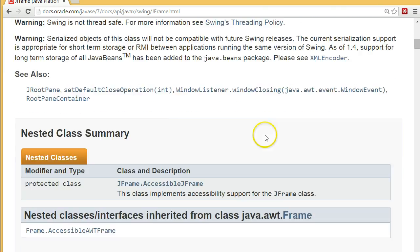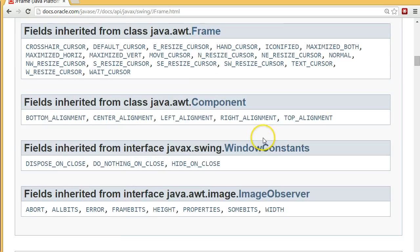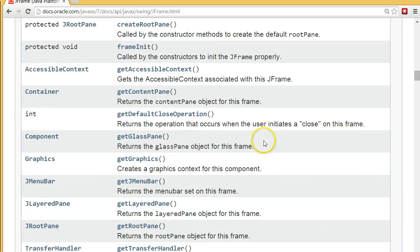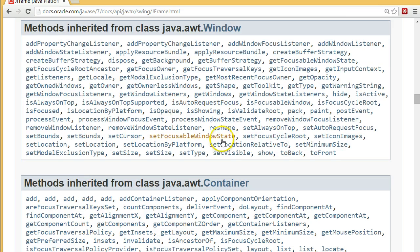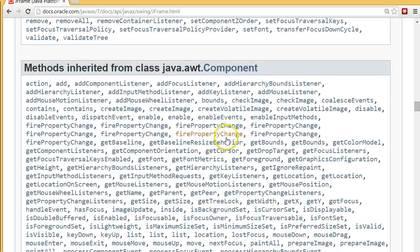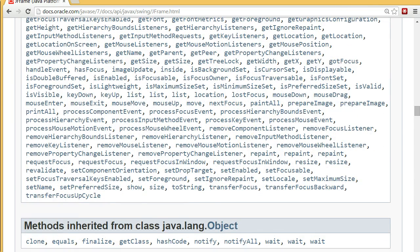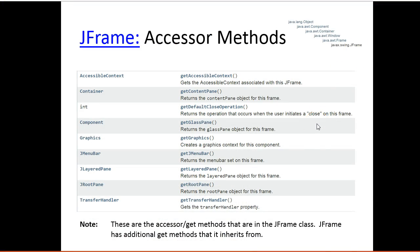So if we scroll down here in our documentation, here are the methods that are in the JFrame class. And these are the methods that are inherited from these super classes. Again, this isn't as important at this point, but it's useful to start kind of thinking about these things.